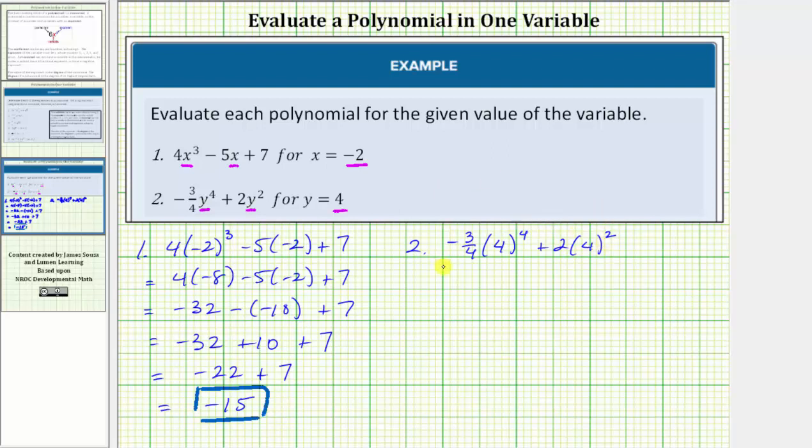Now we evaluate the expression using the order of operations. We first simplify the exponents. Four raised to the fourth power is equal to four factors of four, which equals 256. So we have negative three-fourths times 256 plus two times four squared, which equals sixteen.